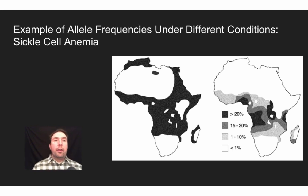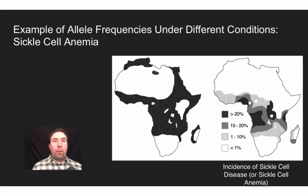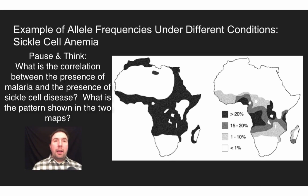Here's our last point and another pause and think. On the left is a map showing where the mosquito-borne parasite malaria is endemic. On the right are the allele frequencies for sickle cell disease. We can see pockets where more than 20% of individuals carry the sickle cell allele, dropping down to less than 1% in other areas. Pause and think: what correlation do you see between the presence of sickle cell trait and the prevalence of malaria? Why are these patterns occurring?